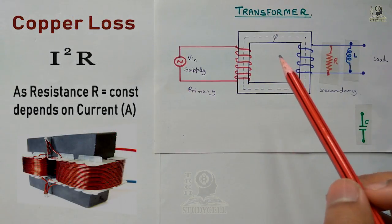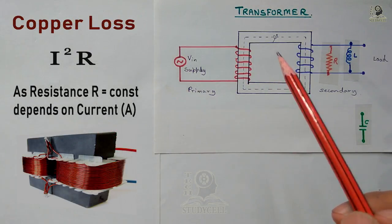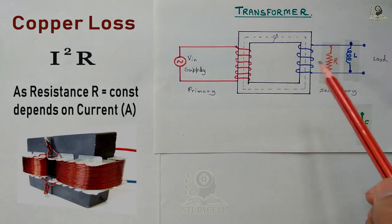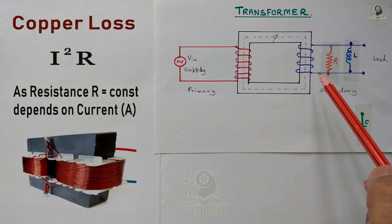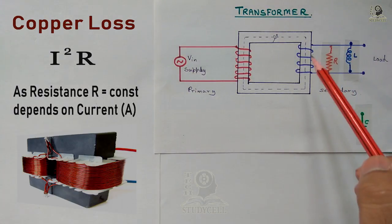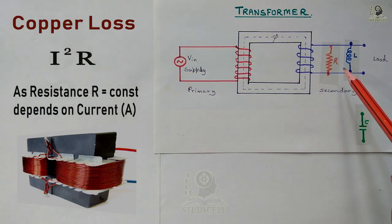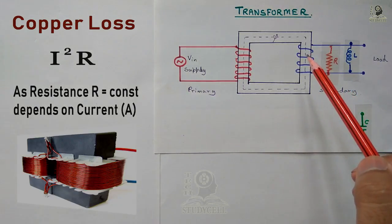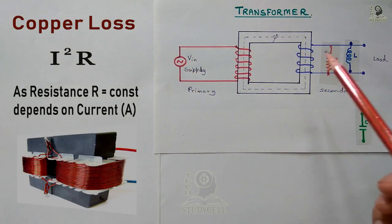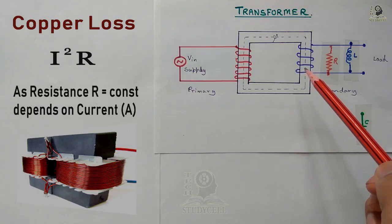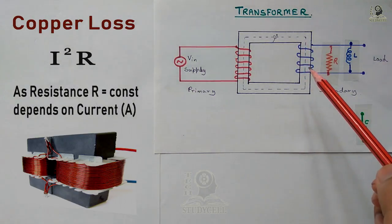The next loss is copper loss. Copper loss is equal to I²R, where R is the resistance of the winding and I is the current flowing through that winding. As we have no idea about the load, the current may vary according to the load — if the resistance of the load varies, the current varies. So I is a variable, but the resistance of the winding is constant. Therefore, copper loss depends on the current flowing through the transformer winding and is a variable loss.